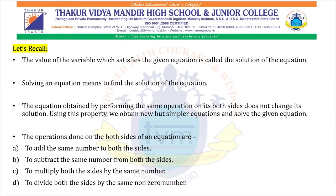The operations done on both sides of an equation are: to add the same number to both sides, to subtract the same number from both sides, to multiply both sides by the same number, and to divide both sides by the same non-zero number.